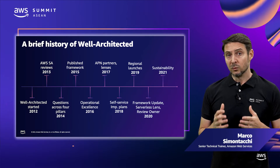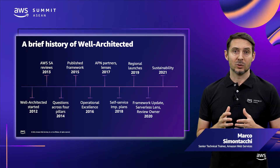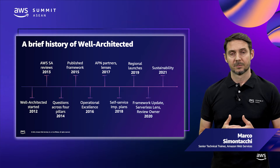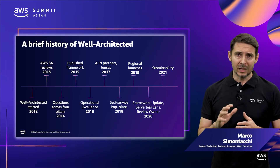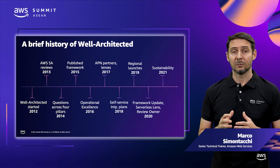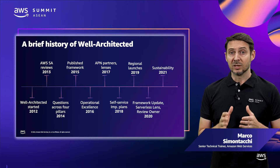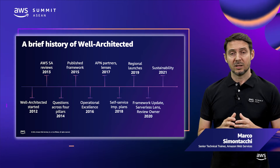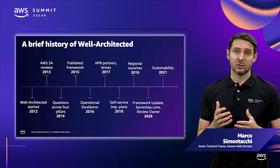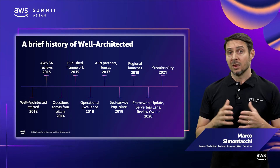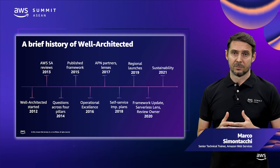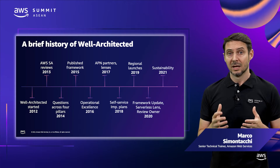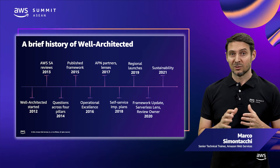AWS also added the Review Owner Workload property to allow customers to easily identify the primary person or group responsible for the review process. Finally, in 2021, AWS introduced the Sustainability Pillar to help organizations learn, measure, and improve their workloads using environmental best practices for cloud computing. The Sustainability Pillar contains questions aimed at evaluating the design, architecture, and implementation of your workloads to reduce their energy consumption and improve their efficiency. The pillar is designed as a tool to track your progress towards policies and best practices that support a more sustainable future, not just a simple checklist.